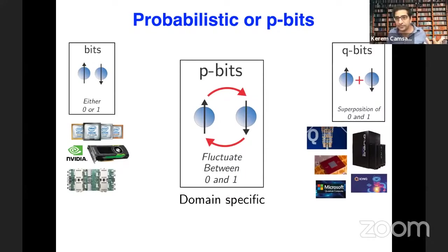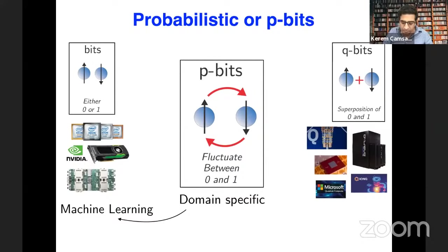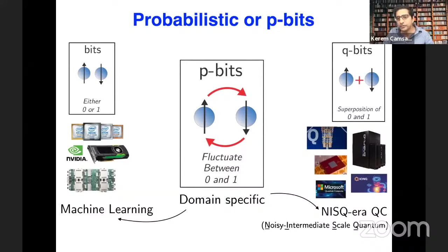The P-bit is not meant to be a substitute for the qubit, nor meant to completely replace the bit, but it's really a good building block for probabilistic computing applications. If you look into machine learning — especially statistical mechanics, the physics-inspired part of machine learning — you see a lot of connections. Similarly, for near-term quantum computation, P-bits seem to have a lot of relevant connections.